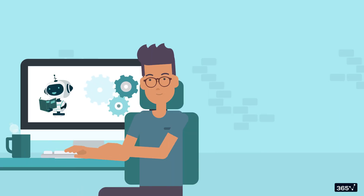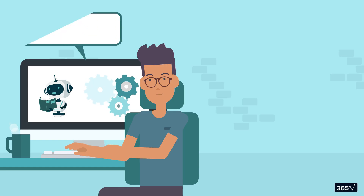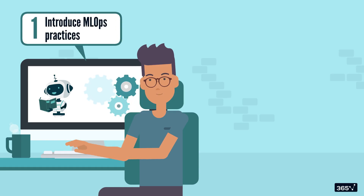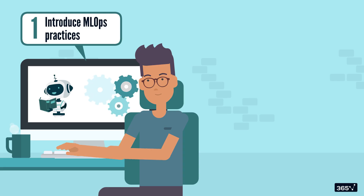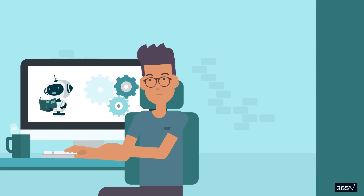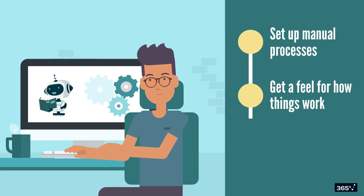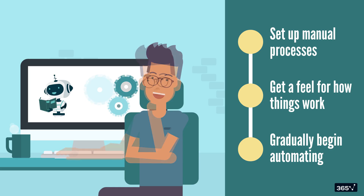When you're building an ML application, one of the first things you'll want to do is introduce ML Ops practices. But here's the thing: don't try to automate everything from day one. Start simple. Set up manual processes first, get a feel for how things work, and then gradually begin automating.